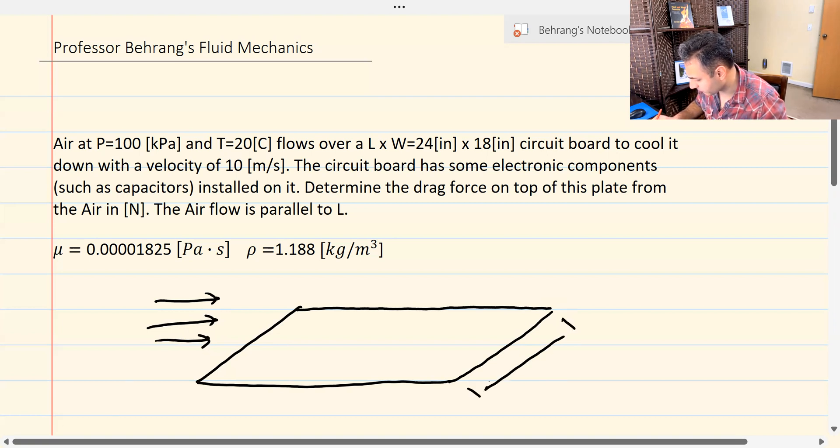The values of the dimensions are given. They're in inches, we have to convert them to meters, because we're going to solve the problem in basic SI units. Everything is pretty much straightforward and is given. And this is the value of L. The velocity is given 10 meters per second. It doesn't say anything about the plate being smooth or whatever. It could be a smooth plate, the circuit board, right? It could be a smooth plate.